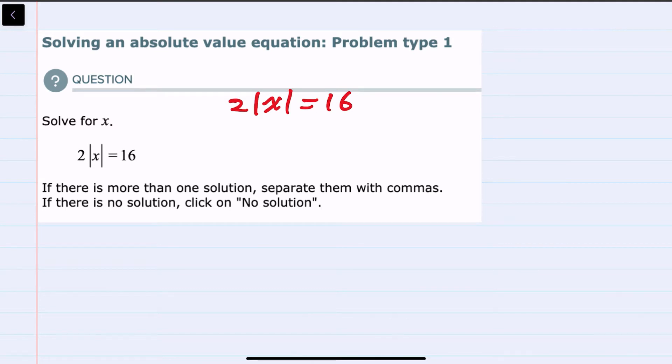To undo multiplying by 2, we would divide both sides by 2. Doing so cancels the 2's on the left-hand side, giving us the absolute value of x equals 8.